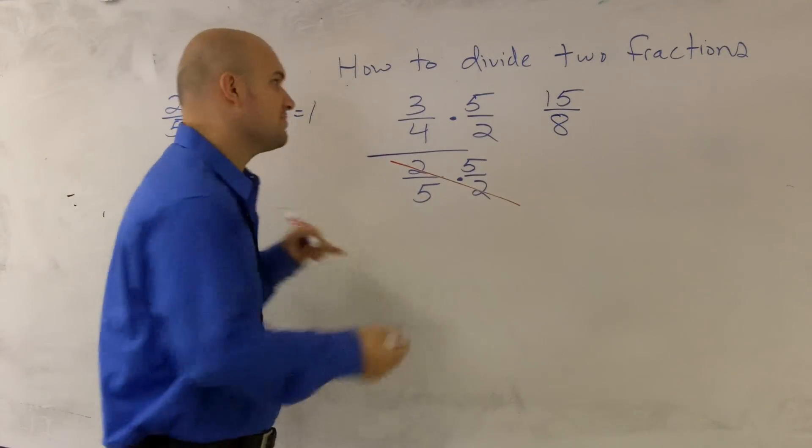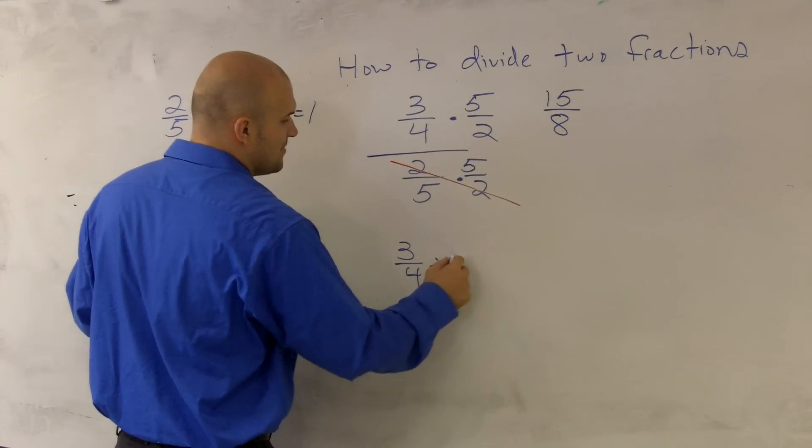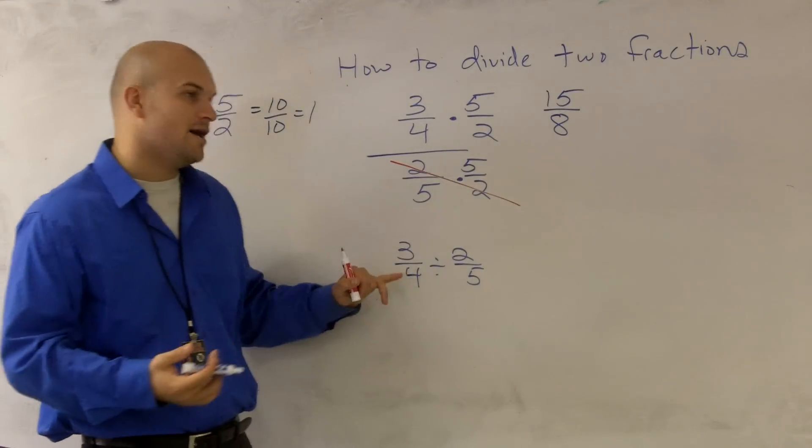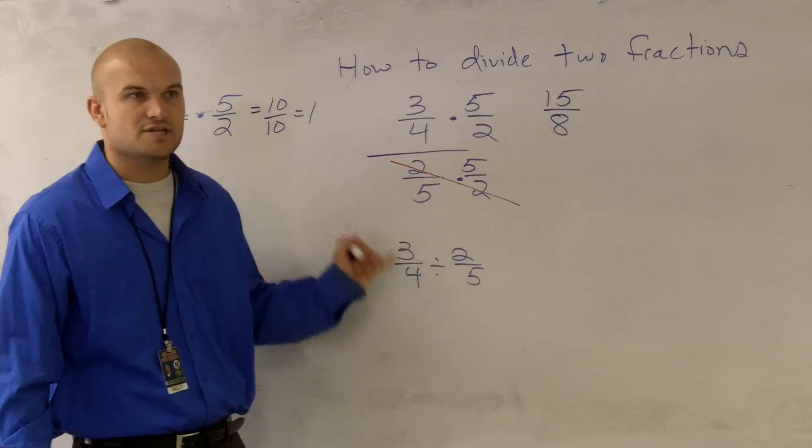I could also rewrite this problem. Another form of writing a division problem would be 3/4 divided by 2/5. And a lot of people like to teach how to solve this problem is to say, flip the second fraction and multiply across.